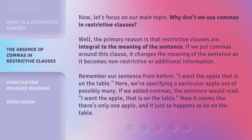Remember our sentence from before: 'I want the apple that is on the table.' Here, we're specifying a particular apple out of possibly many. If we added commas, the sentence would read, 'I want the apple, that is on the table.' Now it seems like there's only one apple, and it just so happens to be on the table.